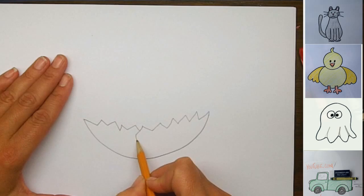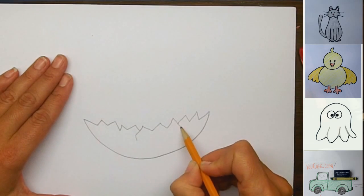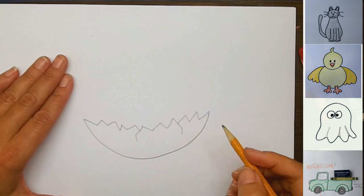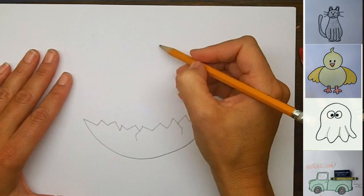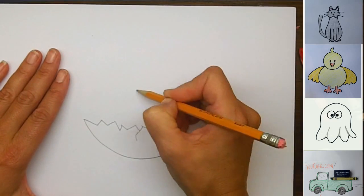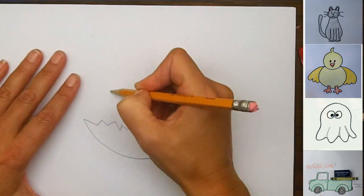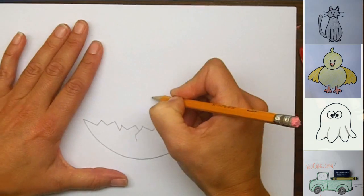And we can even draw some more little cracks coming from these cracked edges. And now we're going to think about where the baby bird is, and his head is going to fill up this whole big section, because baby birds have very big heads.